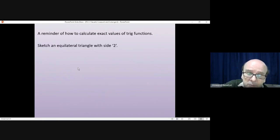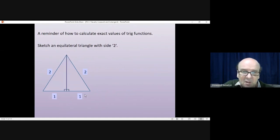The first angles we'll look at are 30 and 60 degrees. In order to look at those, we need to sketch an equilateral triangle with side 2, which would look something like that. Cut the triangle in half with a line that bisects the bottom side in 2 at right angles.